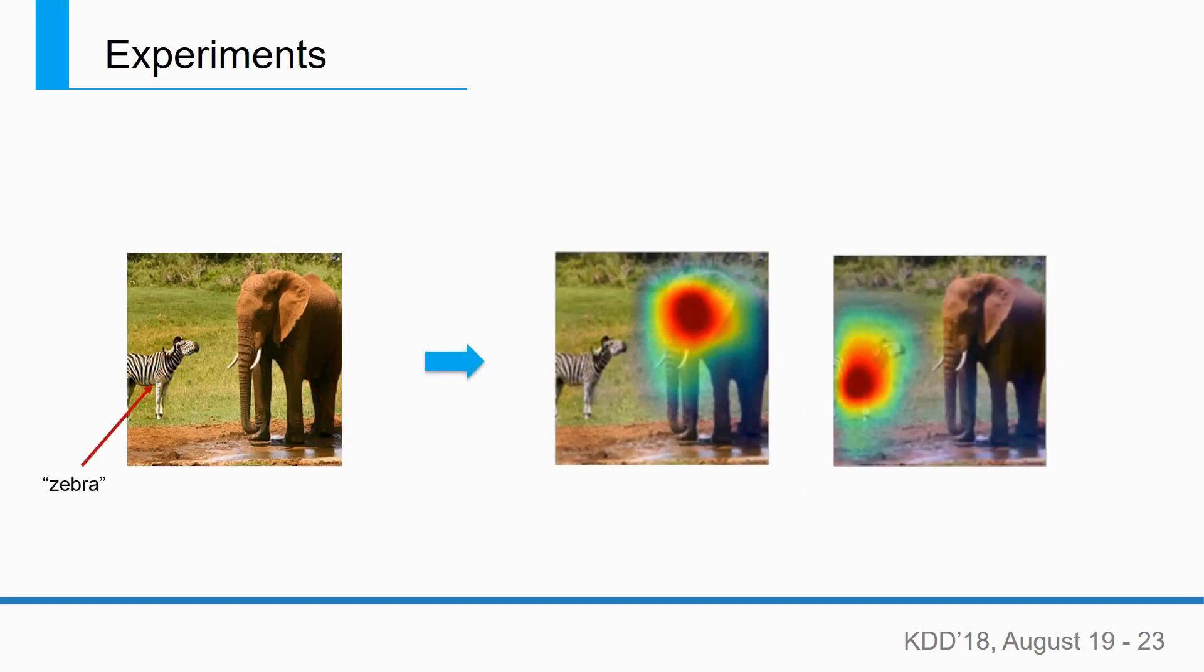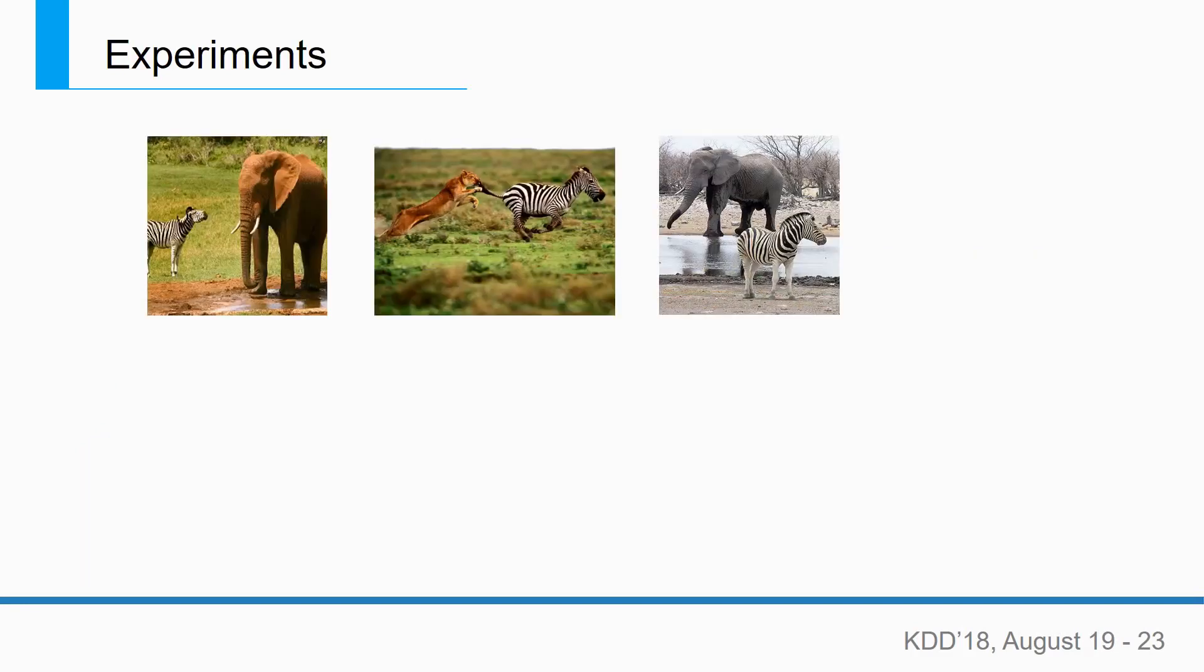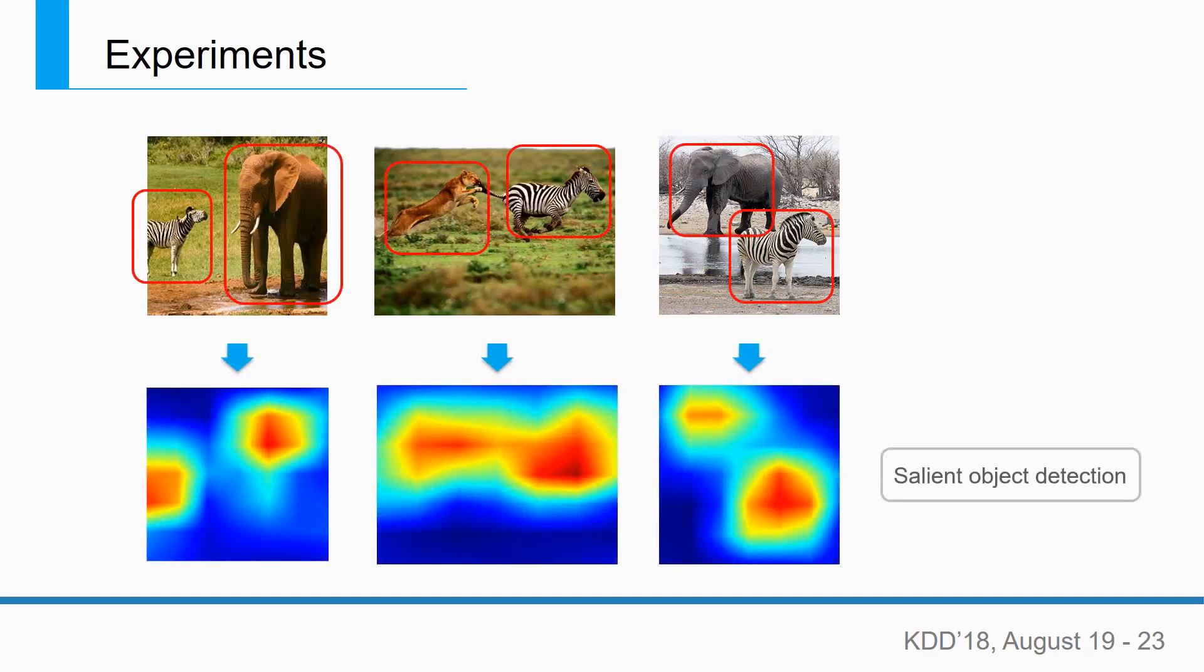Moreover, we demonstrate the Guided Feature Inversion part of our method achieves the effect of salient object detection, which detects the full extent of the foregrounds, neglecting their categories. It validates that using the information of intermediate layers of deep neural network is meaningful.